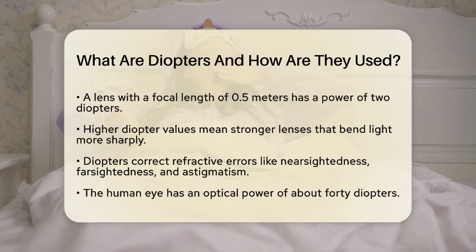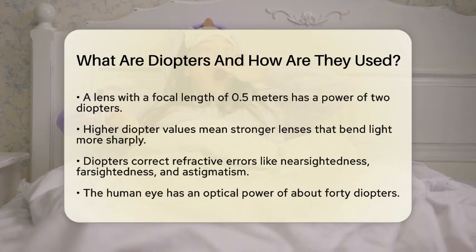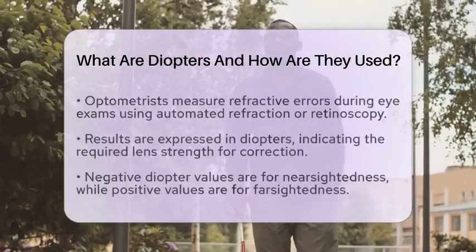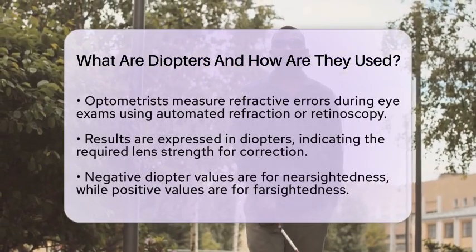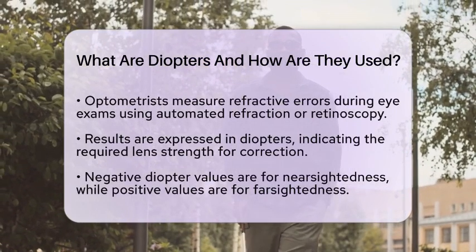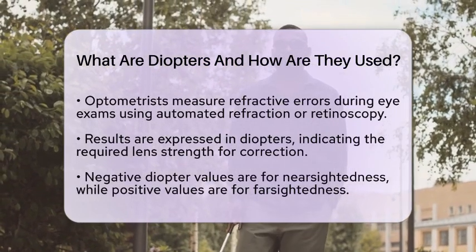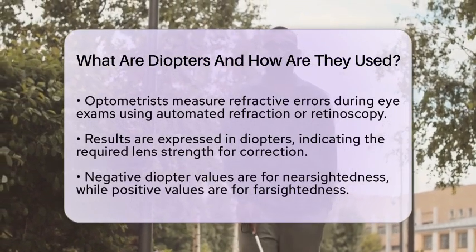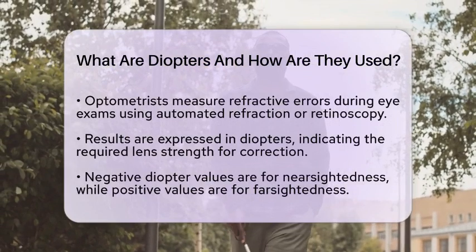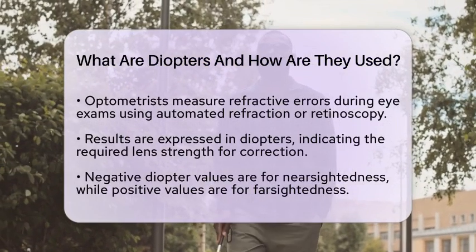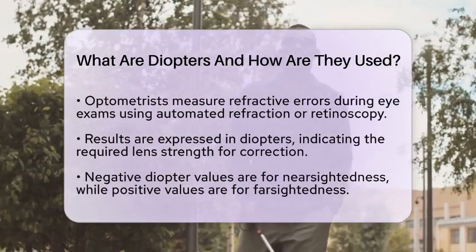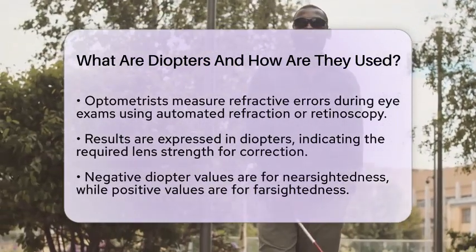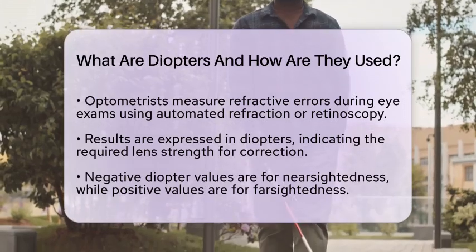During an eye exam, optometrists measure a patient's refractive error using methods like automated refraction or retinoscopy. The results are expressed in diopters, specifying the exact lens strength needed for vision correction. A negative diopter value indicates a lens that helps with nearsightedness by diverging light rays.